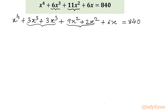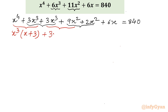Now I am going to factorize the LHS only. From the first two terms we can take x³ common. So if I take x³ common, inside the bracket I will be having x plus 3 from these two terms. Then similarly from the next two terms I will again take 3x² common — what is left? x plus 3.